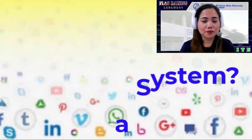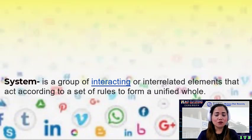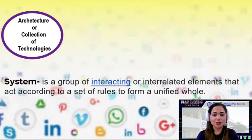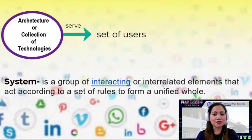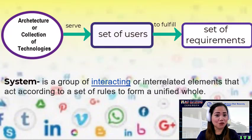What is a system? A system is a group of interacting or interrelated elements that act according to a set of rules to form a united whole. It is an assembly of different components for the specified requirements, or a collection of technologies that communicate and interact with each other in order to serve a certain set of users and a certain set of requirements.